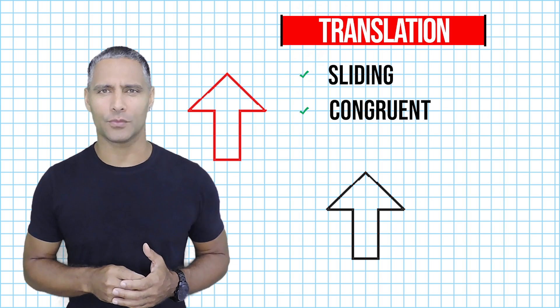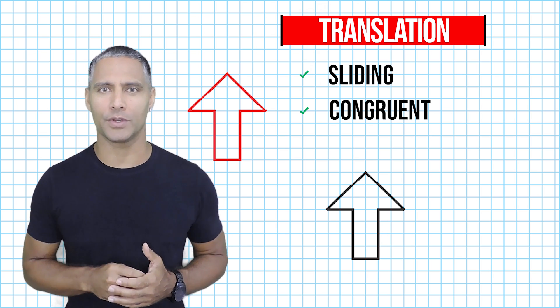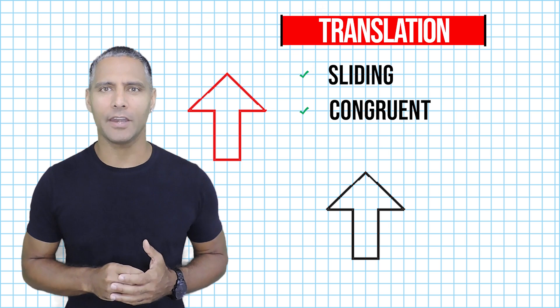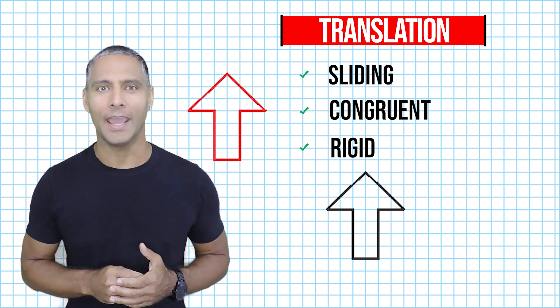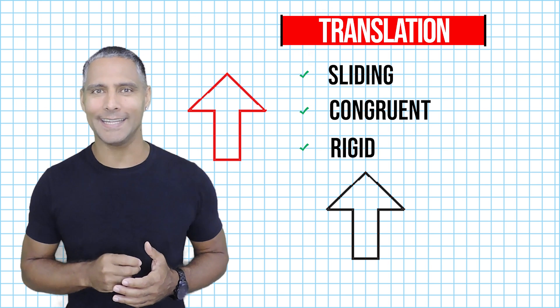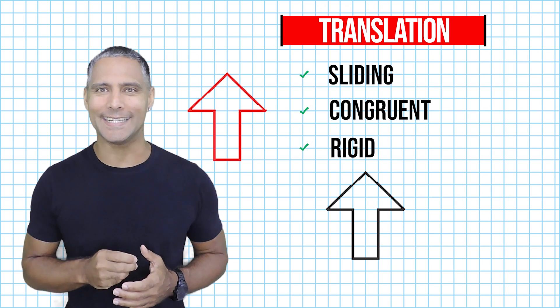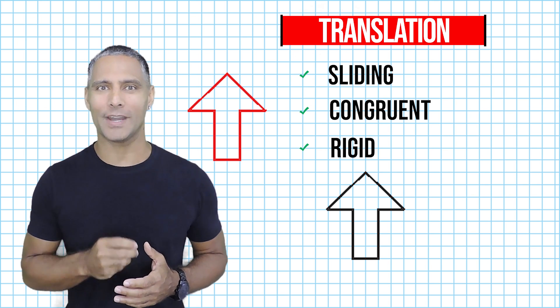Because translations result in objects being congruent to their original, we must categorize any translation as a rigid transformation. A rigid transformation is any type of transformation that did not change its shape or its size.